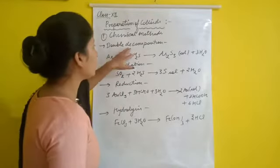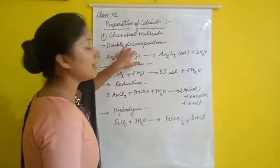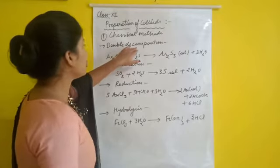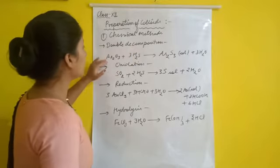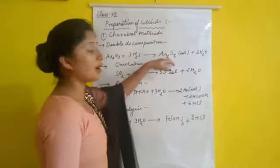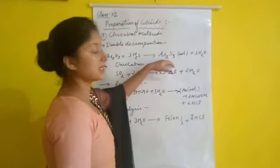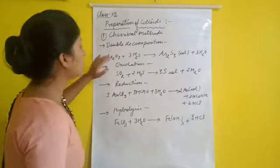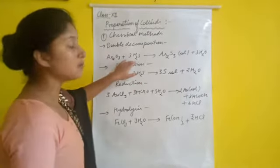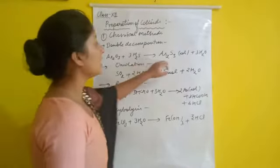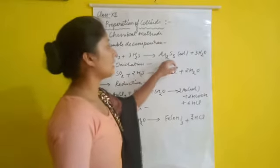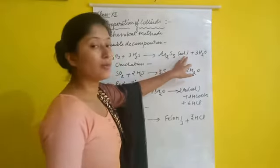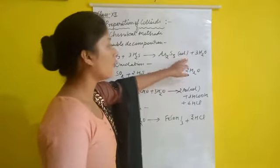The first method is double decomposition. By double decomposition we can get a sol of arsenic sulfide. Arsenic oxide reacts with hydrogen sulfide to give arsenic sulfide as a sol and three molecules of water.